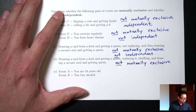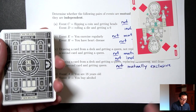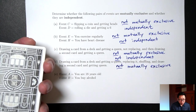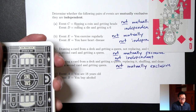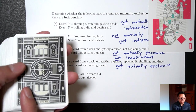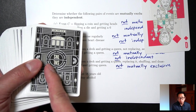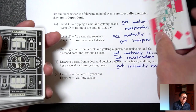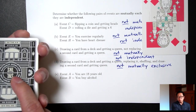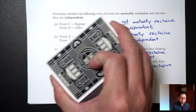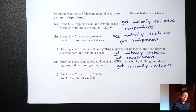Are these two draws independent? If I know I got a queen on the first draw but this time I put it back and reshuffle, does that affect whether I get a queen on the second draw? This differs from Part C. In Part C, we didn't put it back, so it changed the probability. But in Part D, putting it back and reshuffling resets the situation. It doesn't matter what I got on the first draw — I'm always going to have four queens to choose from for the second draw. So it doesn't change the probability of getting a second queen. Because they don't affect each other, they are independent.